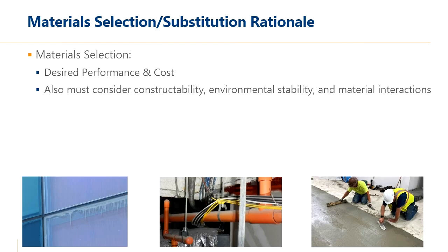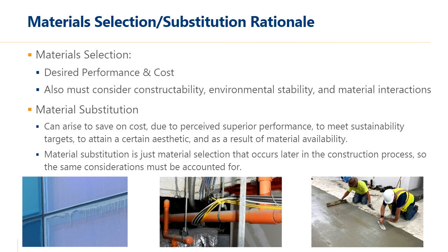There can be advantages to using newer materials or doing substitutions, but the important takeaway is that they are not the same and will not necessarily behave the same. These differences in performance — both good and bad — need to be considered as part of the selection or substitution process. During material selection, we obviously consider desired performance and cost, but digging deeper we must consider constructability, environmental stability, and material interaction. For material substitution — which is really just material selection that occurs later in the construction process — you have to account for all of those same things. Resources include design professionals, published literature, material manufacturer guidance, professional societies, decision-making tools available online, mock-ups, and laboratory testing.